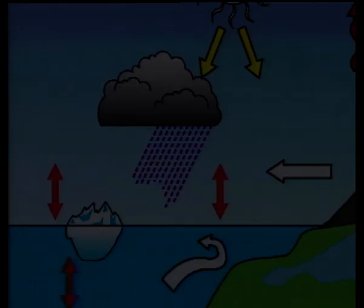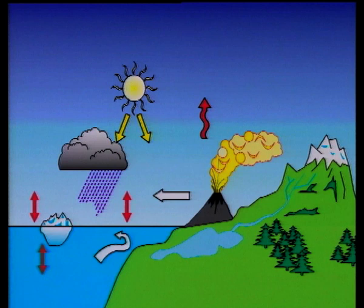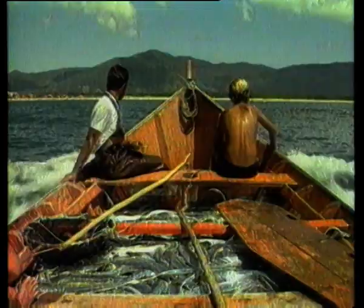With this hierarchy of sophisticated, realistic models, we are able to study today both the impact of man's activities on climate and the nature of natural climate variability. For example, we can predict climate variations such as El Niño, a phenomenon which occurs at irregular intervals of several years.